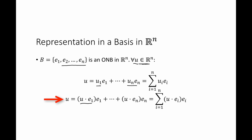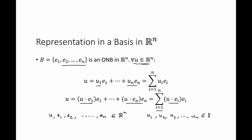Or, instead of using the components directly, I can use the dot product u dot e1, which gives me the component u1. So u equals (u dot e1)·e1 plus (u dot e2)·e2 and so on, plus (u dot en)·en, which is the sum from i equals 1 to n of (u dot ei)·ei. It's very important not to confuse the variables: u, e1, e2, up to en are vectors, while u1, u2, u3, and un are real numbers — the components of the vector u in the orthonormal basis set B.